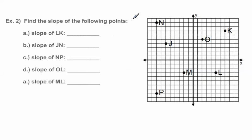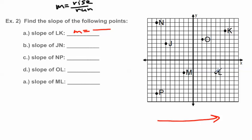Let's do a couple more problems. Find the slope of segment LK: M equals rise over run. Going from L to K — left to right, L comes first, K comes second — the rise is up 10, so that's a positive 10. The run going from left to right is 2. So we have 10 over 2, which reduces down to 5 over 1, or simply 5. The slope of LK is 5.